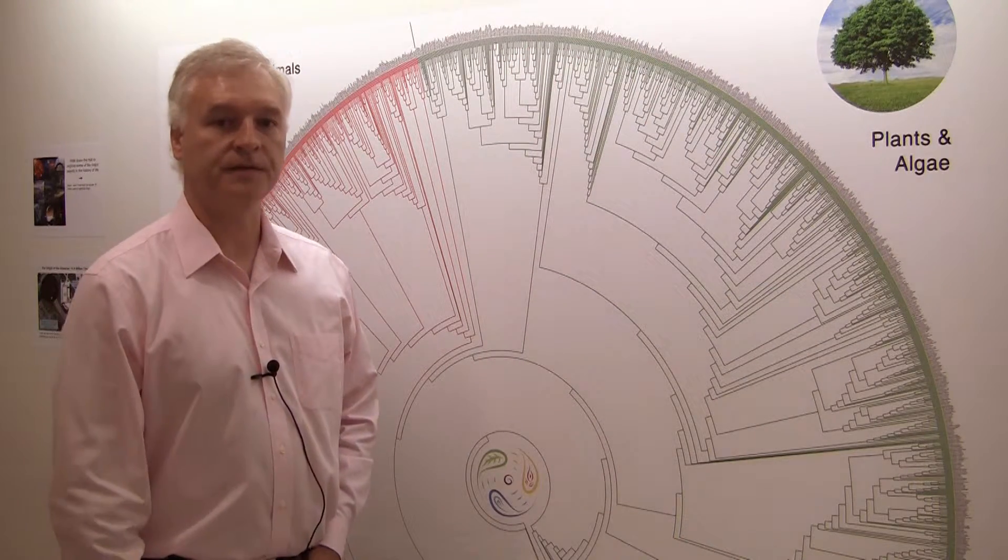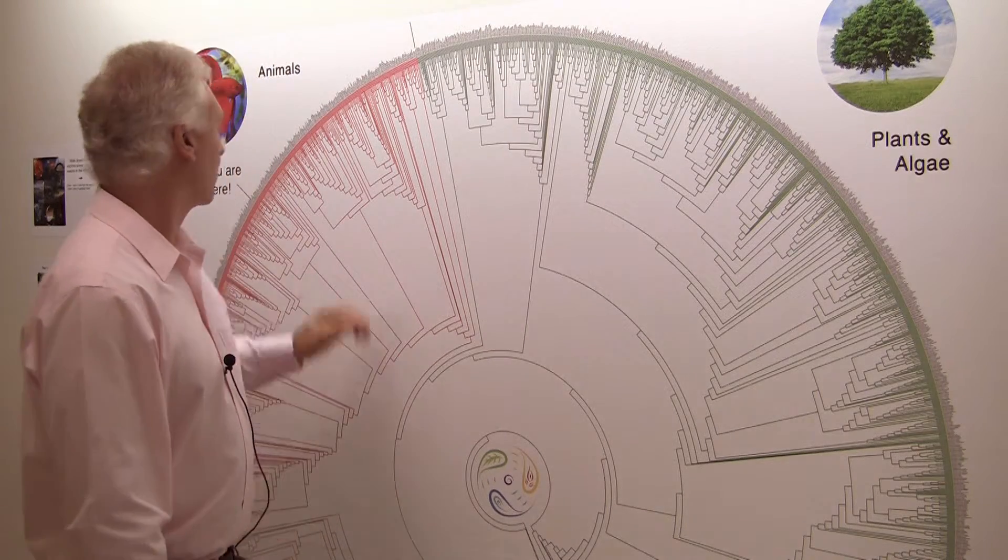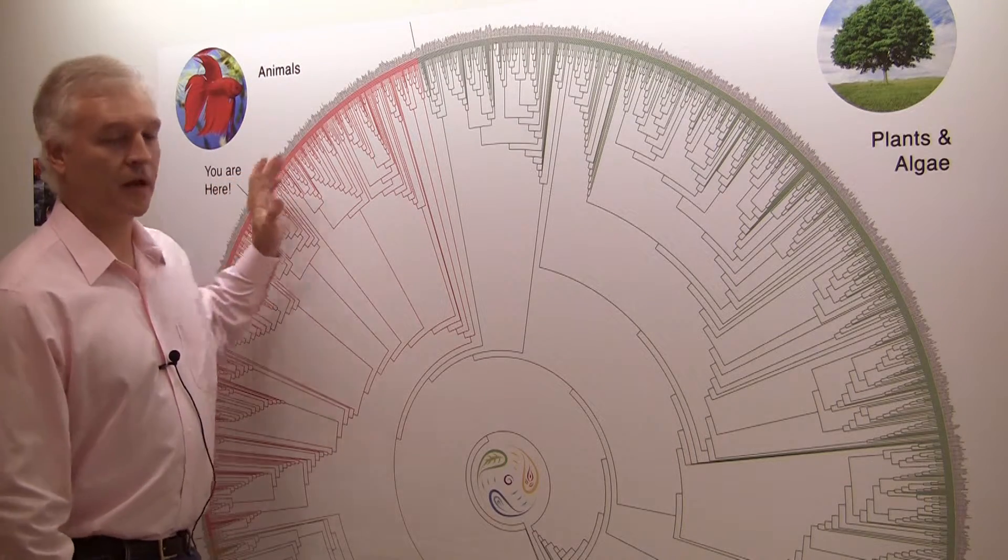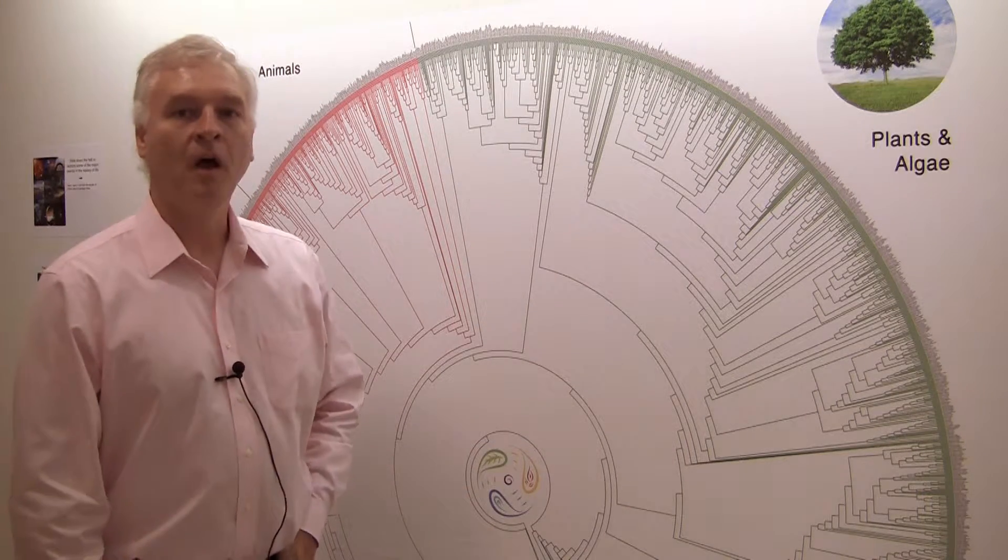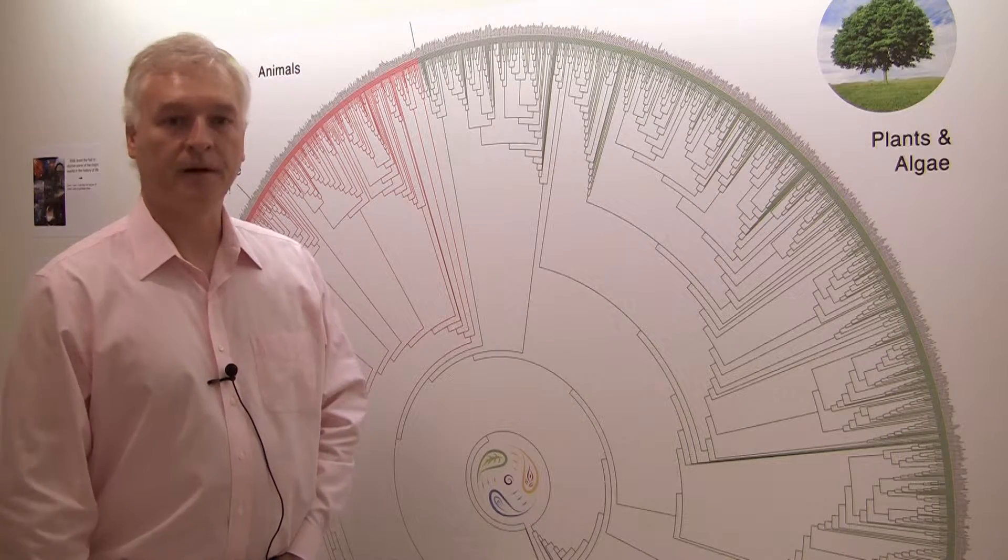And the waste product of photosynthesis is oxygen, which happens to be a poison for most biological systems. And we have genes in our genome that allow us to survive in the presence of oxygen, genes called superoxide dismutase, for example.